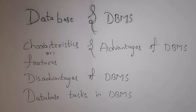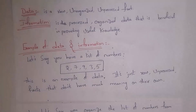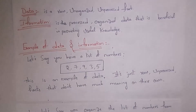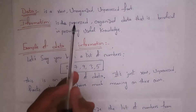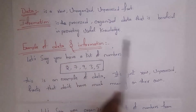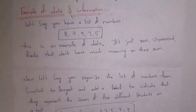First I will explain what is a database, but before that you need to know the difference between data and information. Data is a raw, unorganized, unprocessed fact, whereas information is the processed, organized data that is beneficial in providing useful knowledge. Data is a raw fact, whereas we call information as processed data.